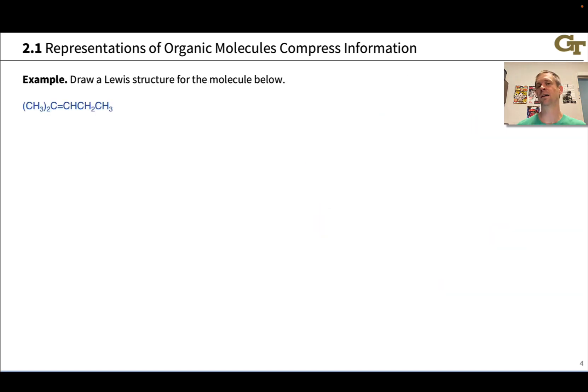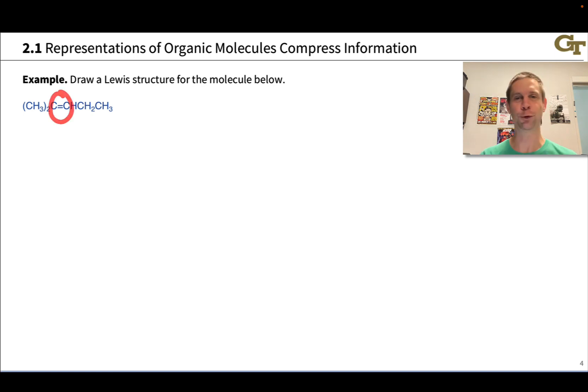Let's practice expanding a condensed structure to a full-blown Lewis structure on this slide. So we have this condensed structure in blue. It's pure text except for this equals sign-looking symbol, which indicates a double bond between these two carbons. I think it's helpful here to start to number the carbons, just to make sure that we account for every atom that's implied by this condensed formula. Notice, for example, that the CH3 in parentheses with the subscript 2 implies two methyl groups linked to carbon 3. So let's number those methyl carbons 1 and 2.